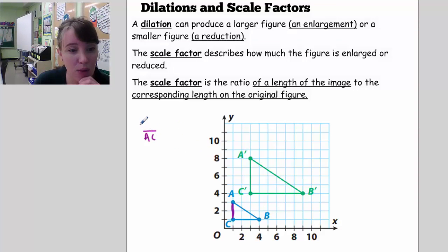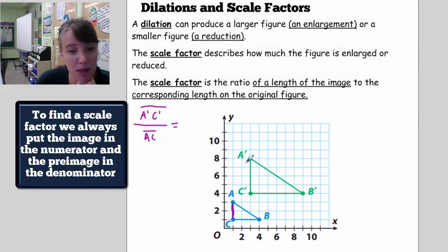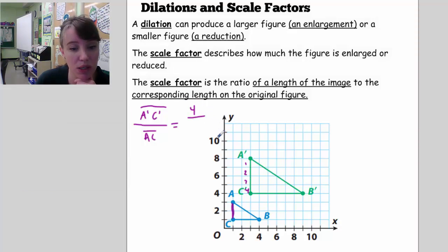So let me pick the line segment AC. So what I want to do is I want to find the ratio of AC to A prime C prime. Remember, this means that this is the side length of A prime, C prime. Well, A prime, C prime is 1, 2, 3, 4 units long. So this is 4 units divided by 2.